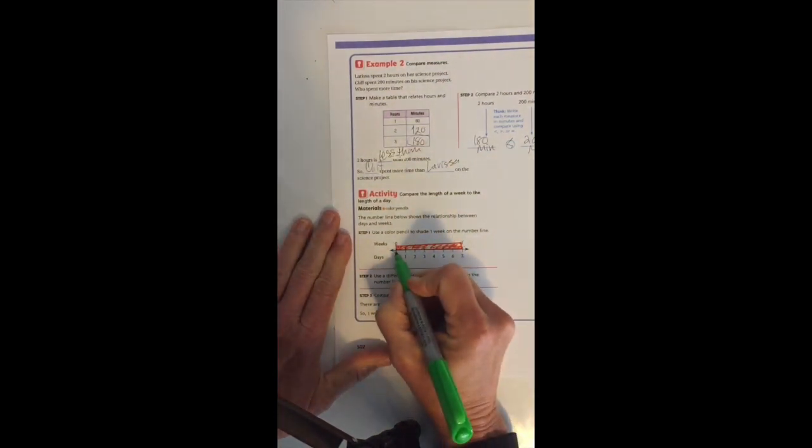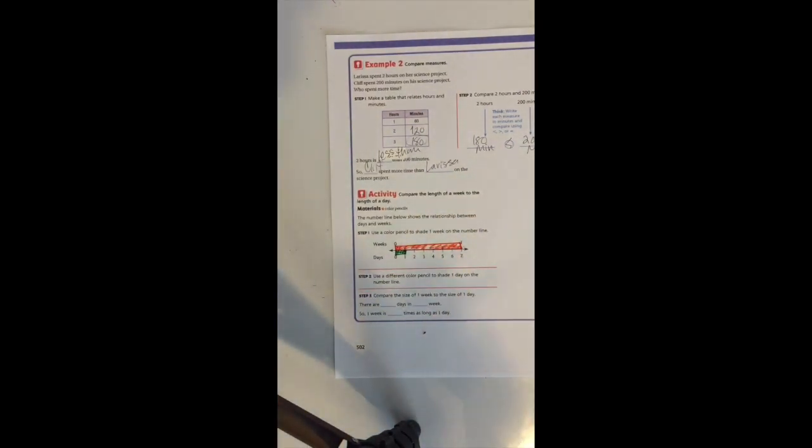Now it says use a different color pencil, so I'm going to switch to a different color and shade one day. One day is on the bottom and it goes from here to here. So now you can compare one week to one day.